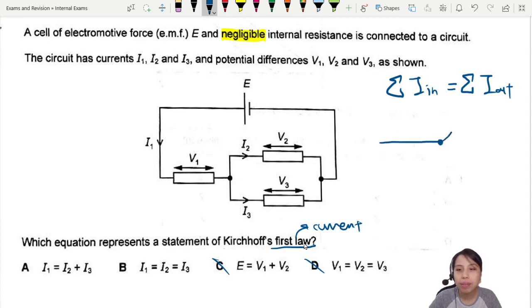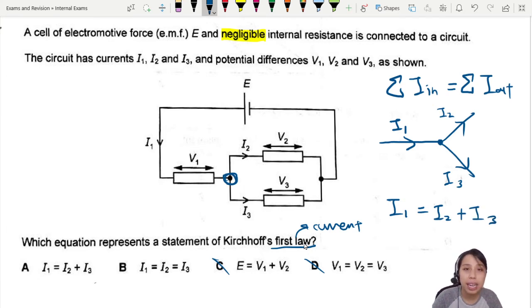could be something like this: something come in, something must come out. So if here is I1, let's say we look at this junction right here. I1 comes in, then I2 and I3 come out. So it has to be I1, whatever that value is, must be the total of I2 plus I3. So that one will be choice A